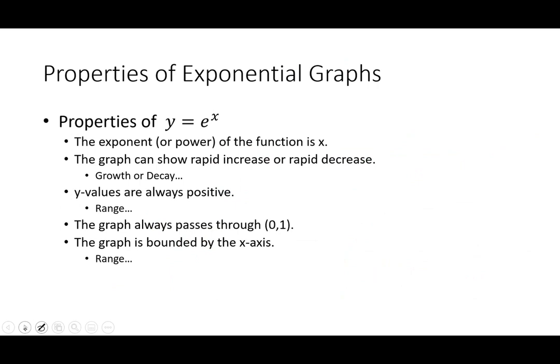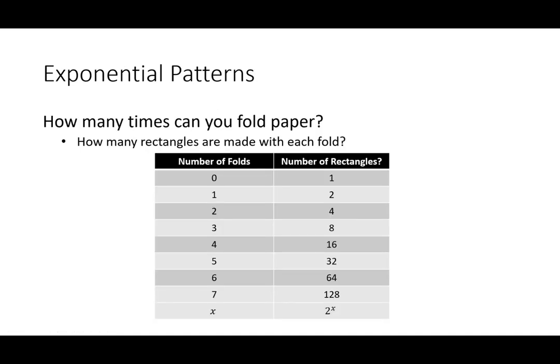Now I want to get into some patterns that come up with exponents. Here's a sort of party trick: you take a piece of paper and bet your friend how many times they can fold it in half. You set the threshold at seven and say you'll give them a hundred dollars if they can do eight folds, but they have to give you five dollars if they can't — twenty-to-one odds.